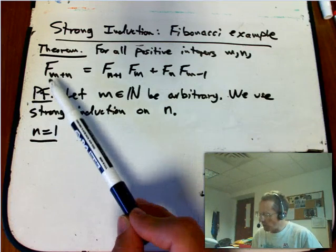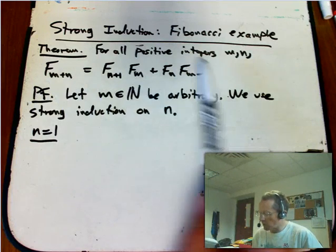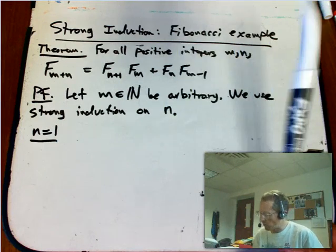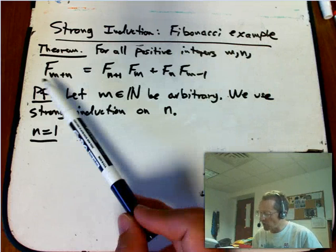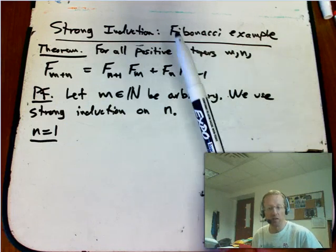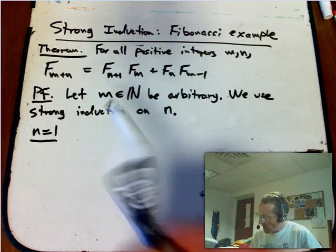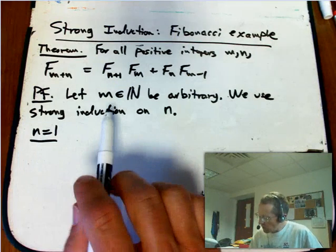So throughout, I'm going to be working with things where m is an arbitrary variable, and it had better work for all m, but it is going to work for all m. So the m's are going to kind of come simultaneously, and the n's come progressively, inductively.